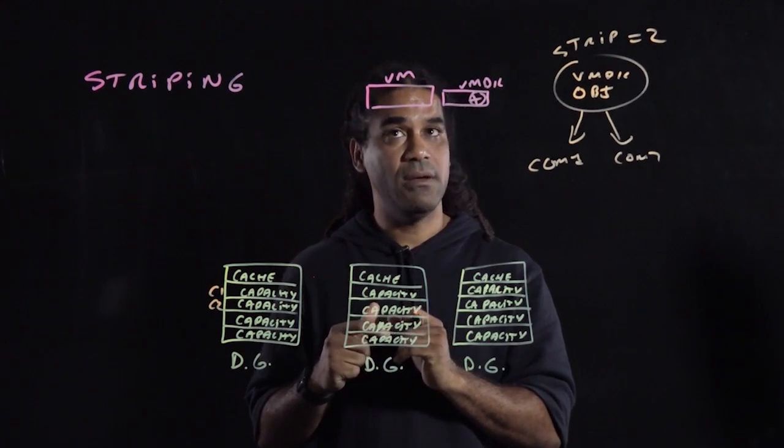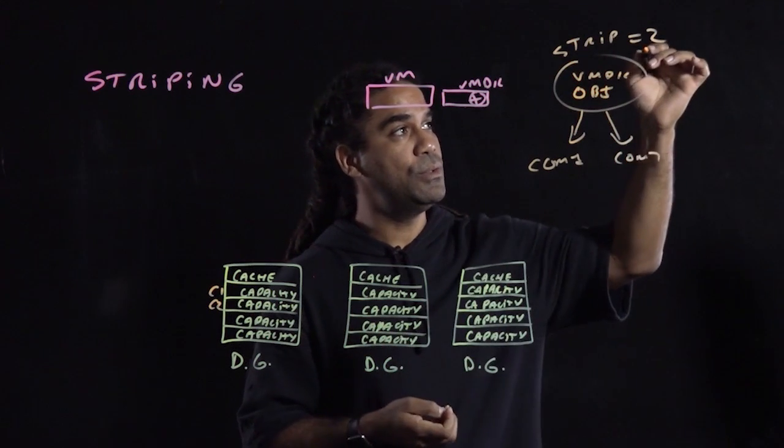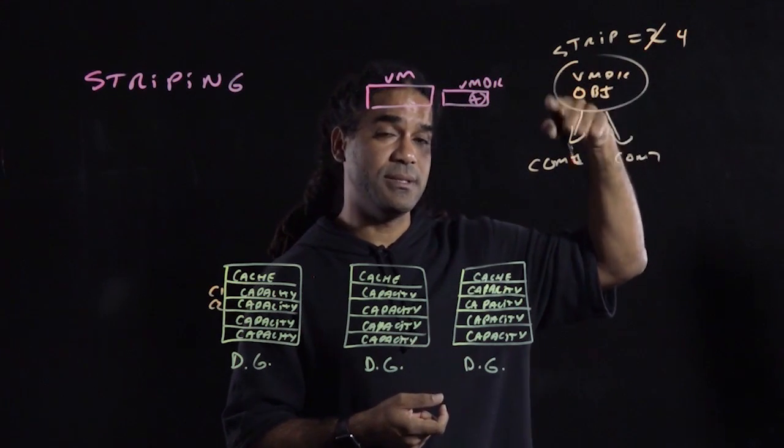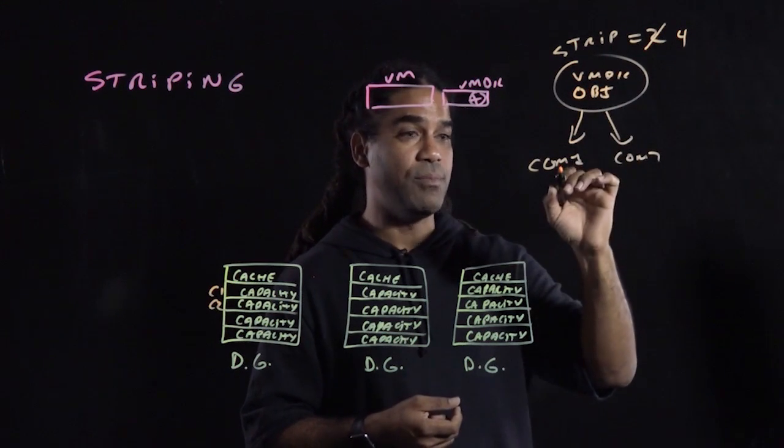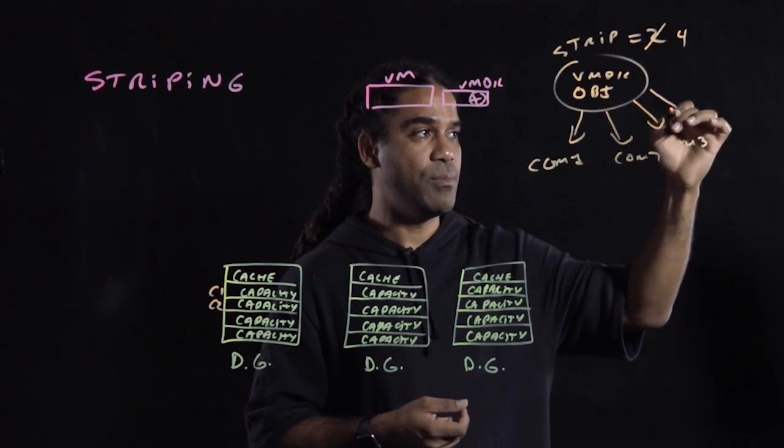Okay, but now you decide, you know what, I need better performance. So instead of a 2, I'm going to go with a 4. So now this object is going to be broken up into four components. So we have components 1 and 2, component 3, and component 4.